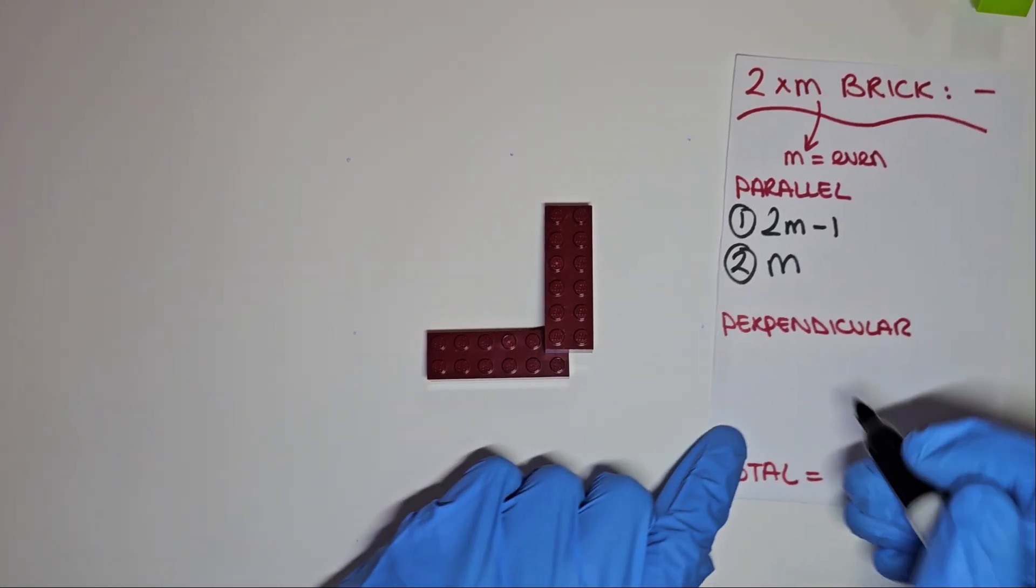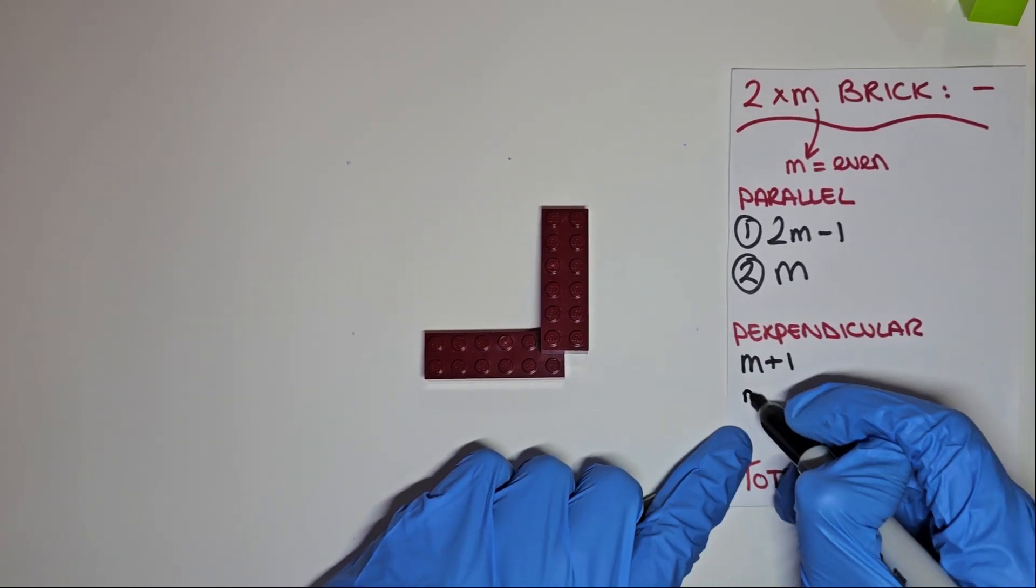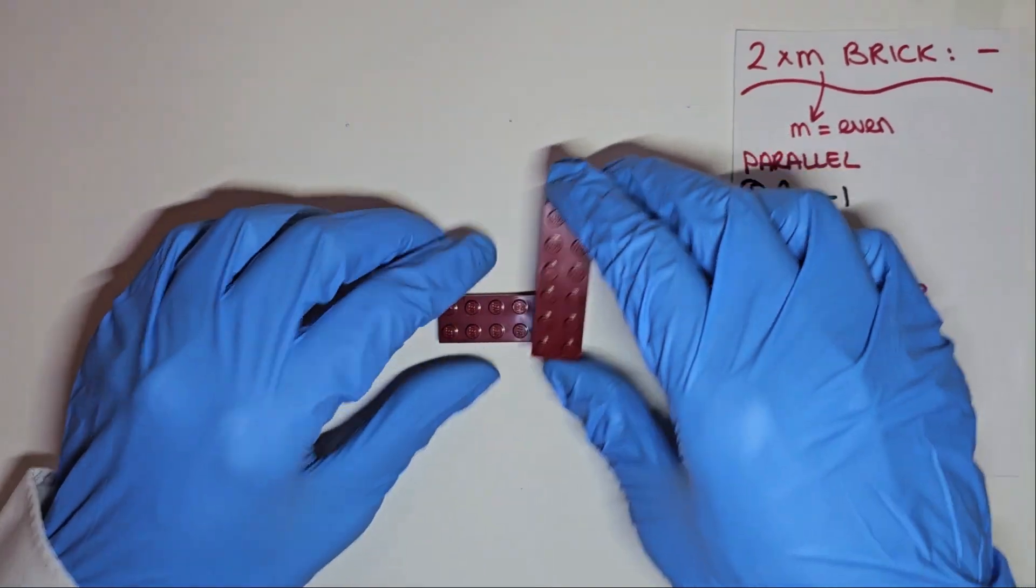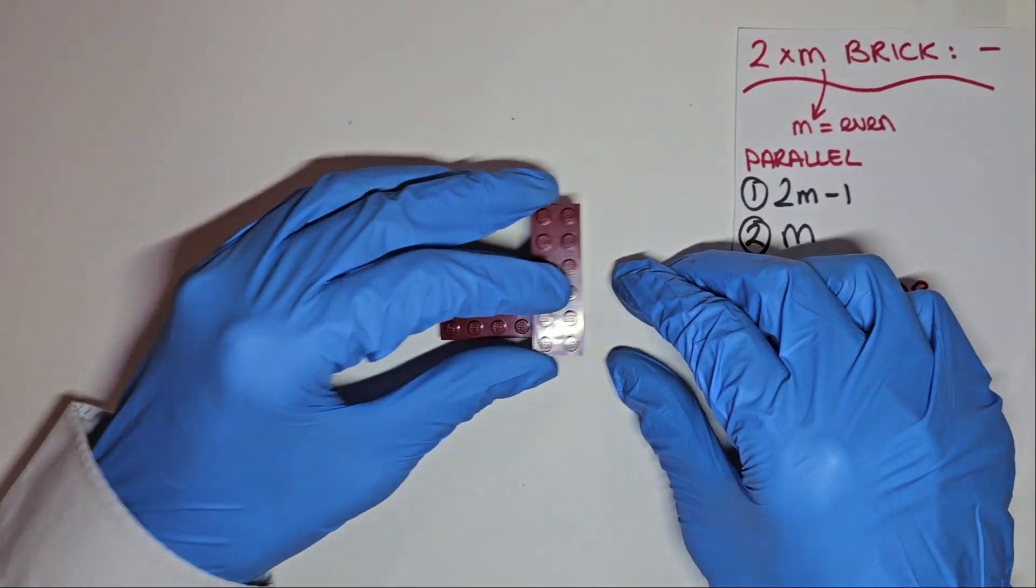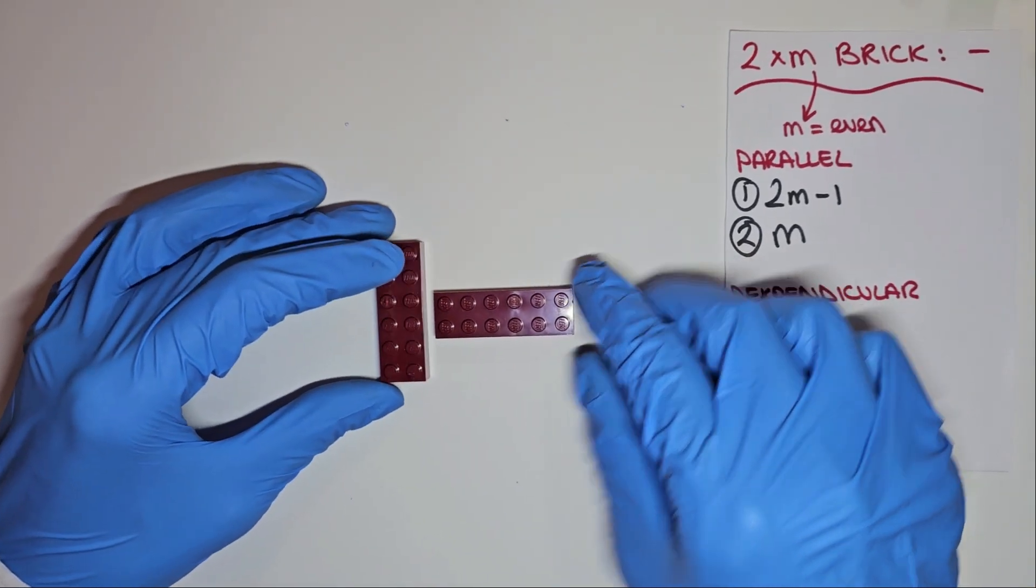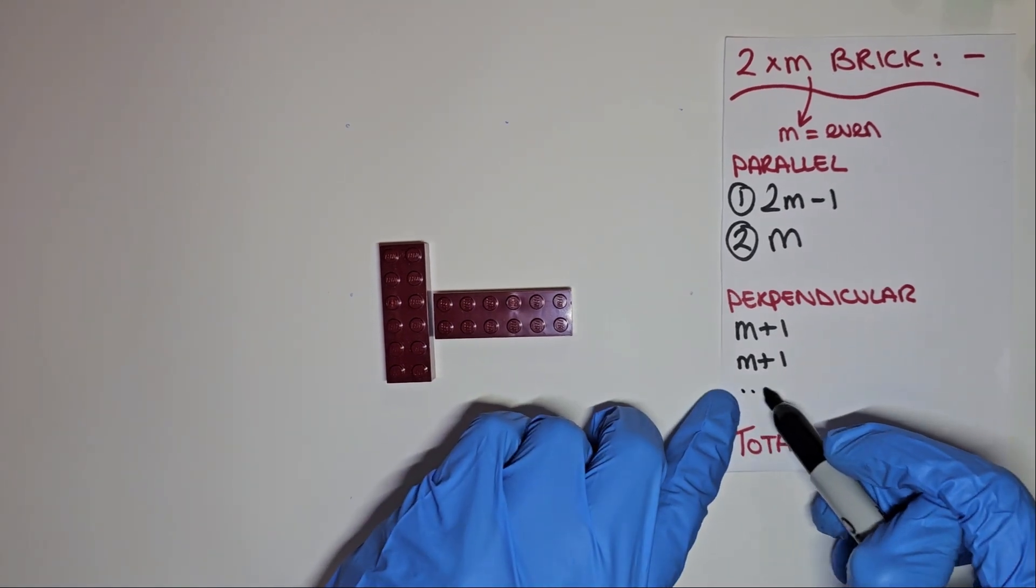Likewise, our next row will also be m+1. And, thinking back to our 2x4 brick, this m+1 combo will repeat for every row until we reach the halfway point. The halfway point will be m/2, so we can write this concisely as m/2 lots of m+1.